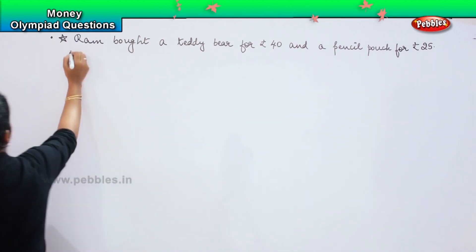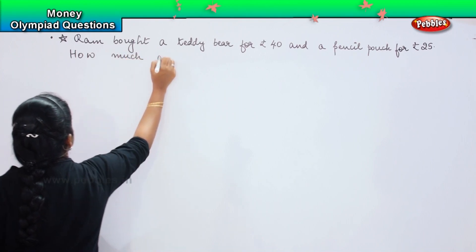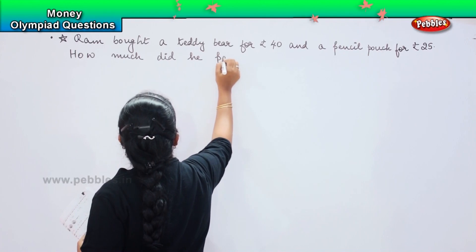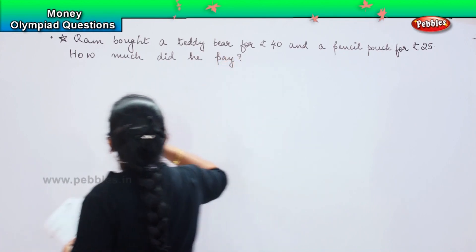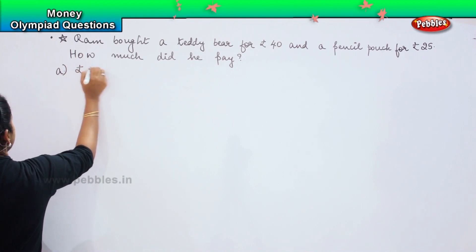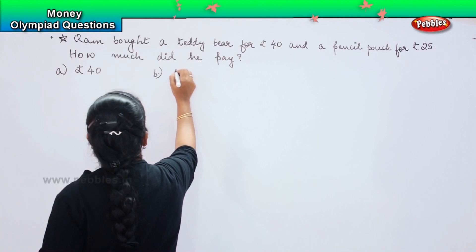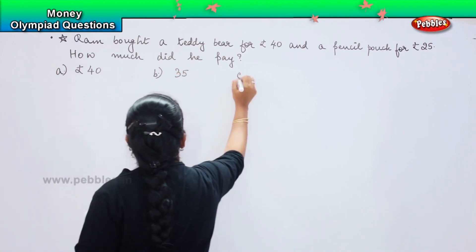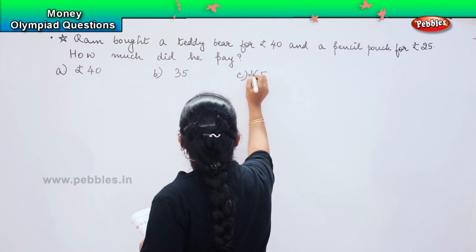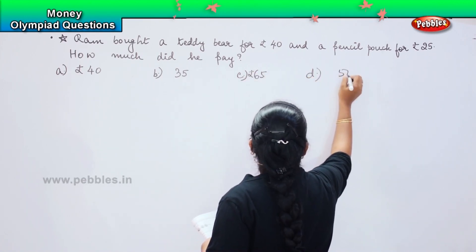How much did he pay? Your options are: Option A, 40 rupees; Option B, 35 rupees; Option C, 65 rupees; and Option D, 50 rupees.